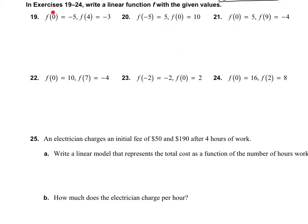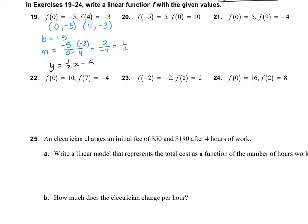In Exercises 19 through 24, they want us to write a linear function with the given values. These are given a little differently than in 13 through 18, but we can get the same points. If you plug in 0 for x, you get an output of negative 5; if you plug in 4 for x, you get negative 3. So the y-intercept is negative 5. Using the slope formula — y's on top: negative 5 and negative 3, x's on bottom: 0 and 4 — that gives negative 2 over negative 4, which is positive one-half. The answer is y equals one-half x minus 5.